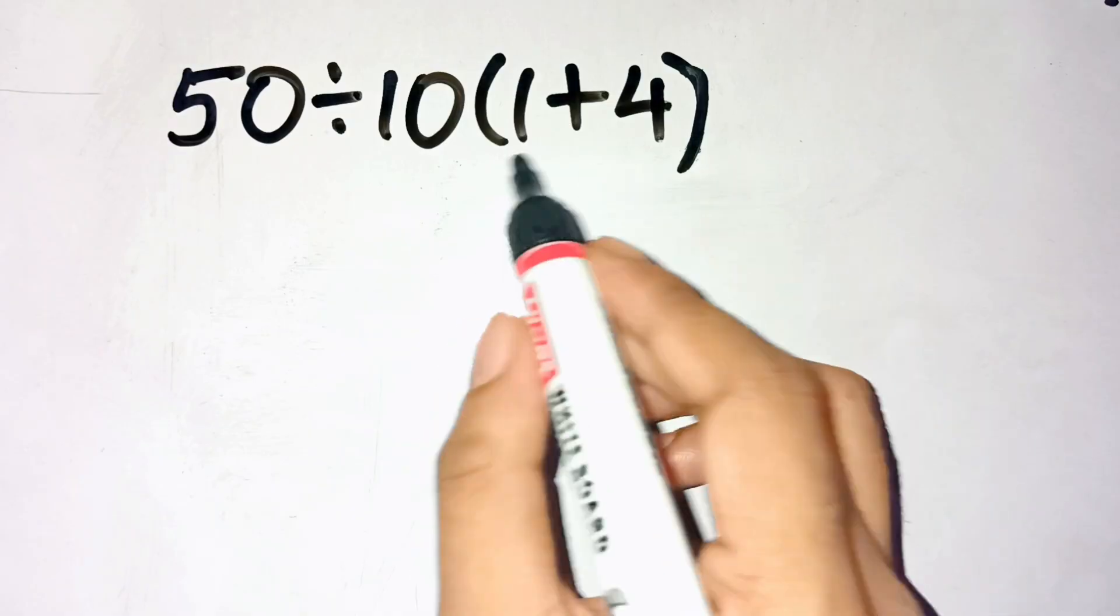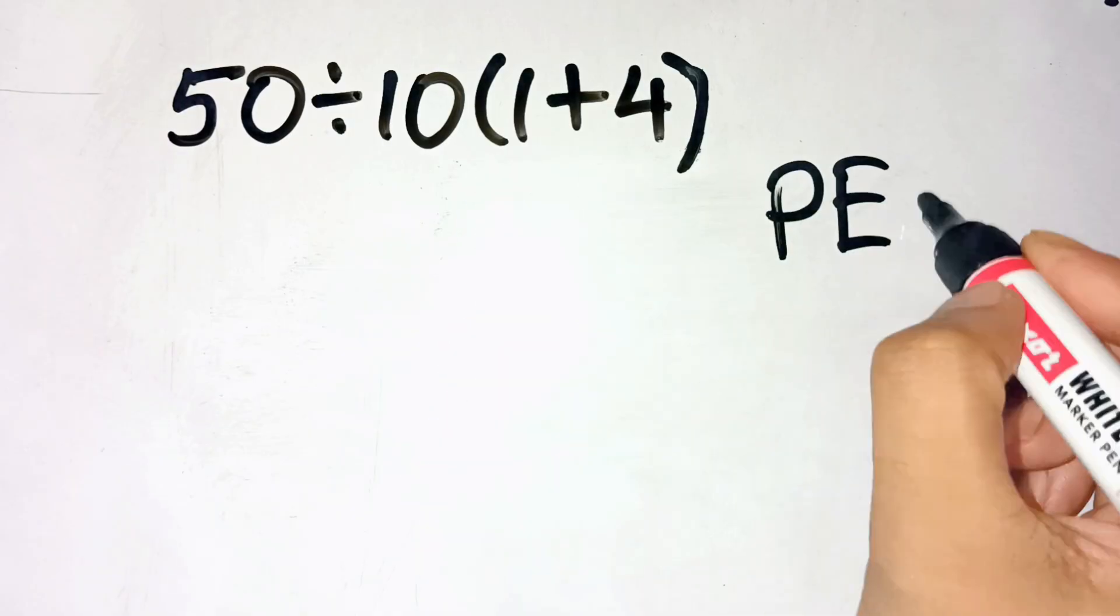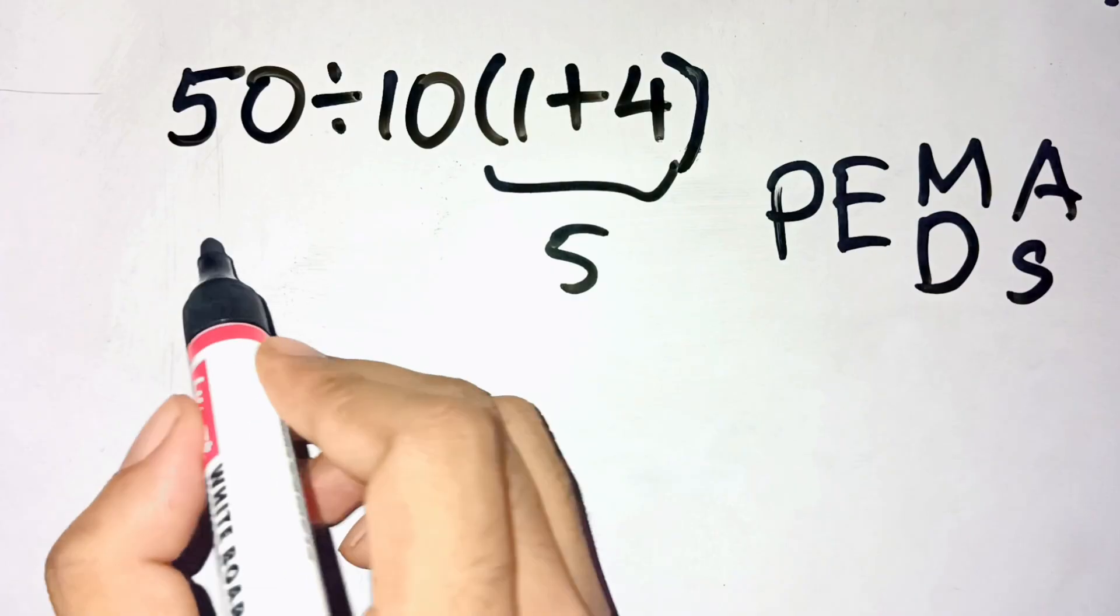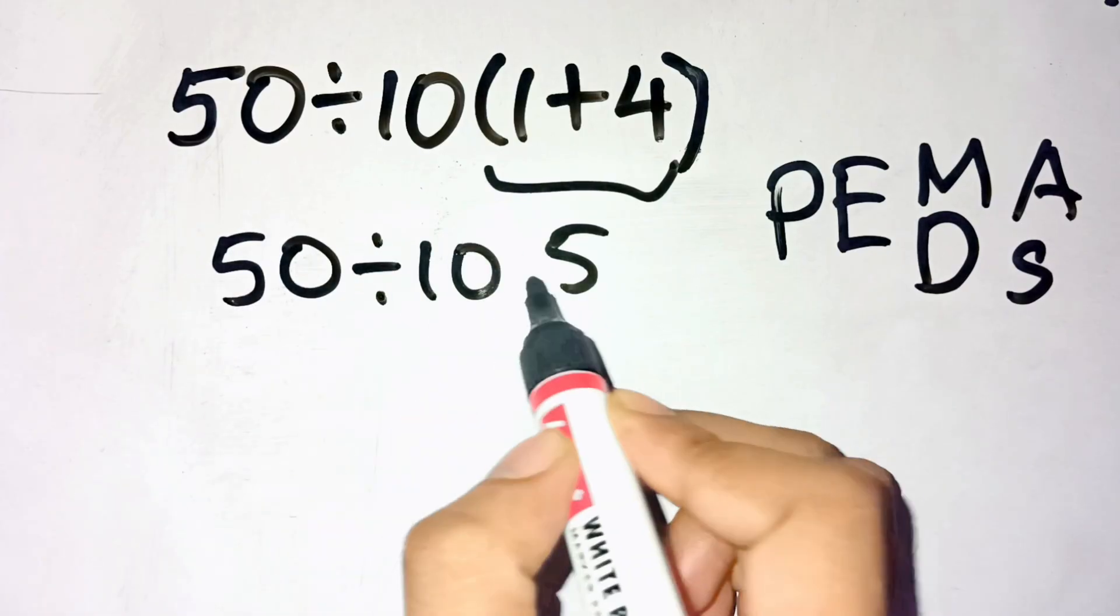Step 1, parentheses first, that's basic PEMDAS. 1 plus 4 gives us 5. Now the equation becomes 50 divided by 10 times 5.